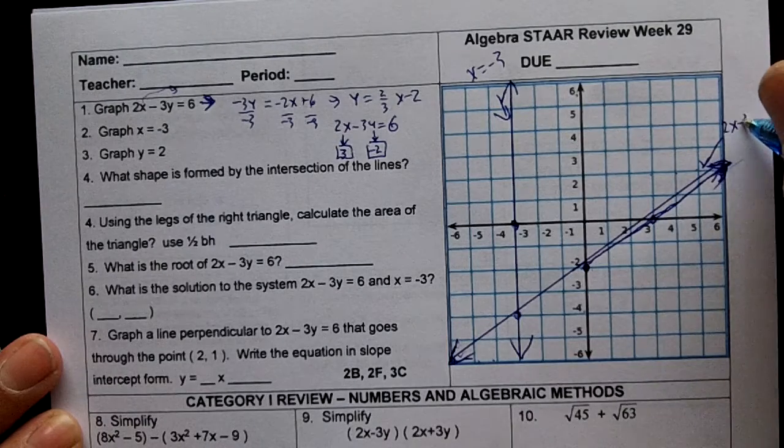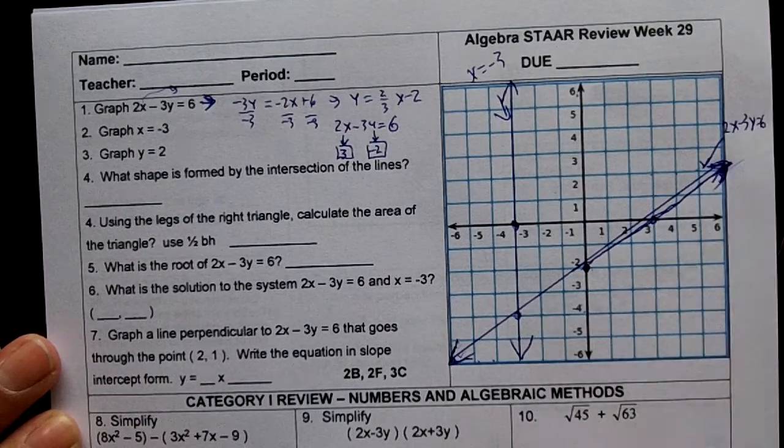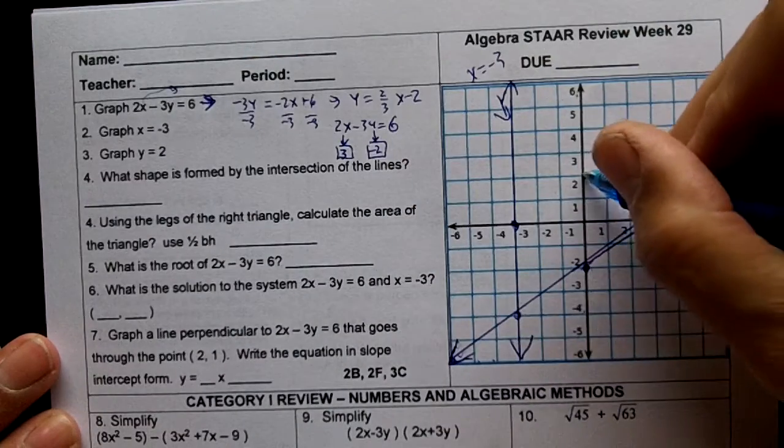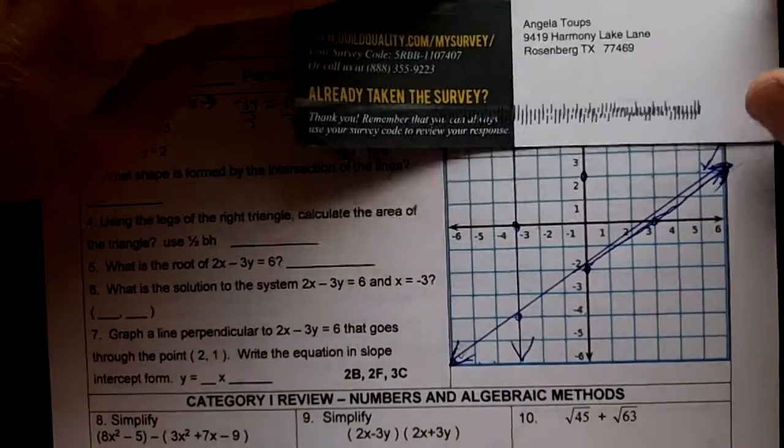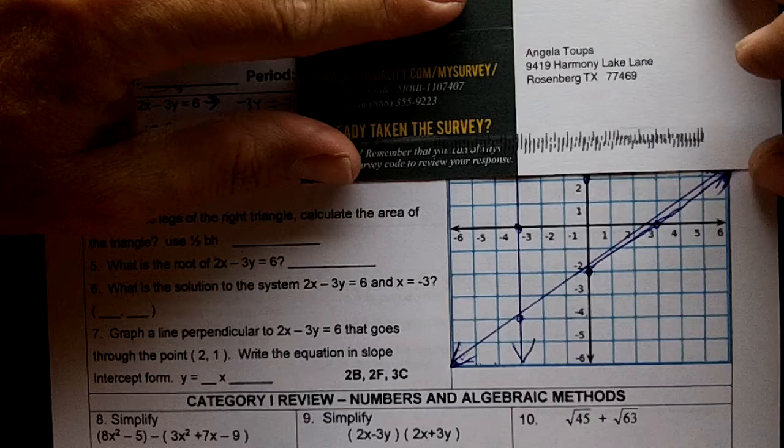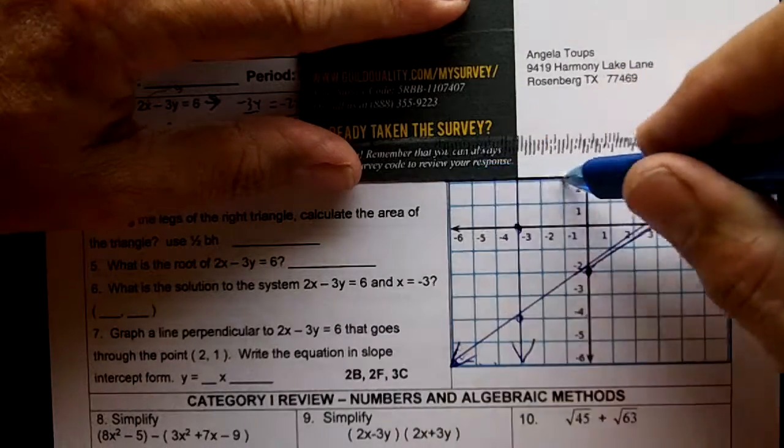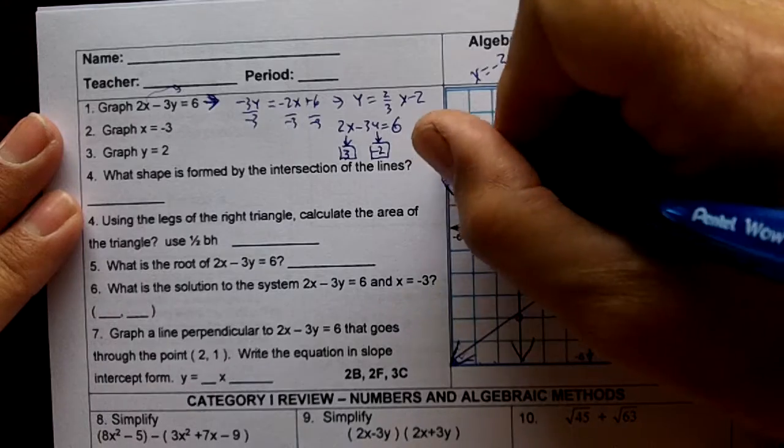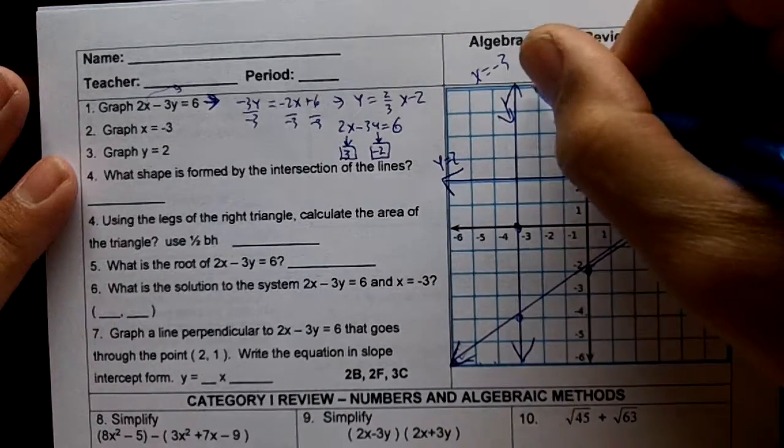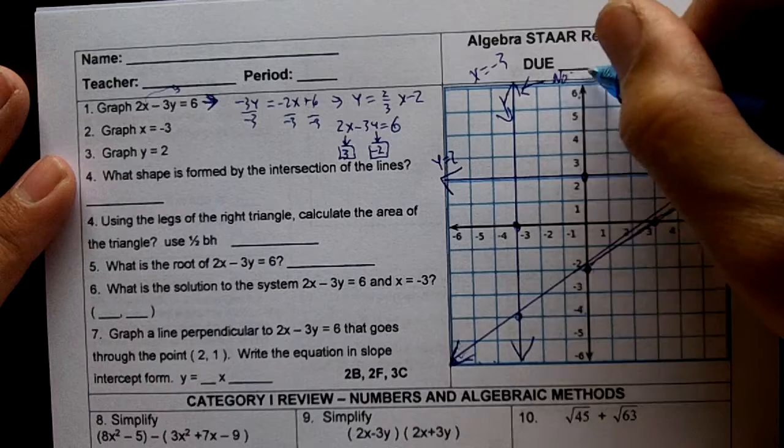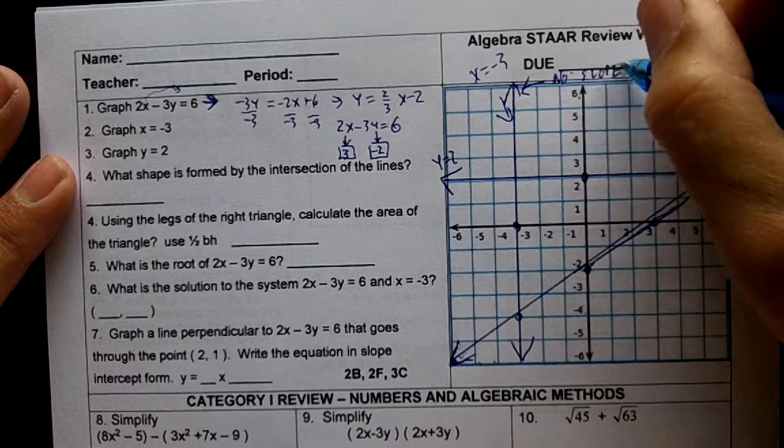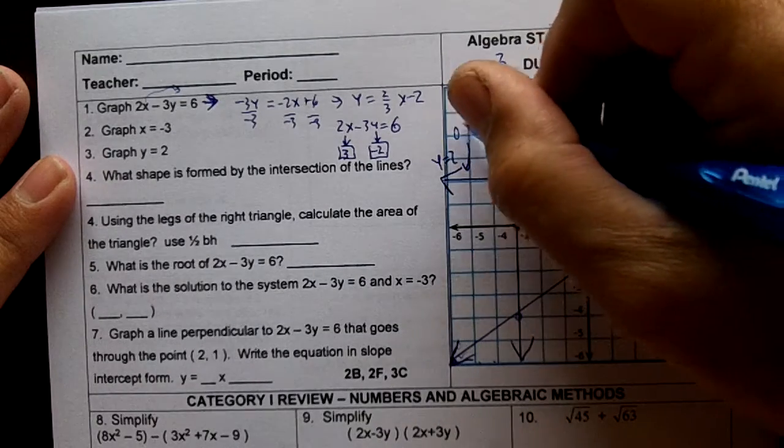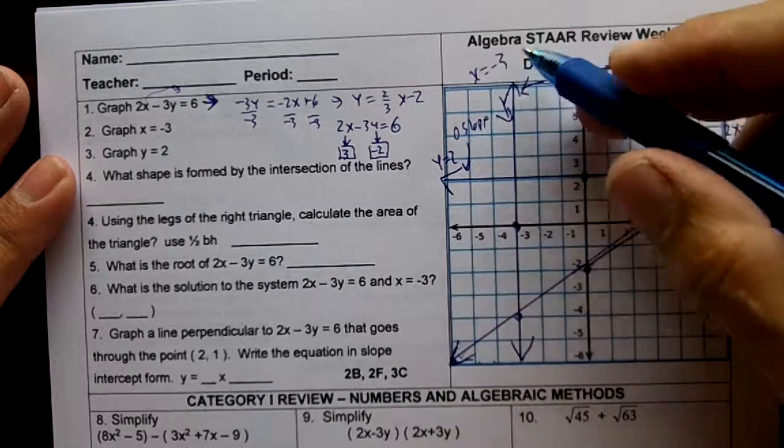This right here is 2x minus 3y equals 6. And then lastly y equals 2 is going to be right here, it's going to be a line straight across just like that. So we have our y equals 2 line. This has no slope and this line right here has zero slope. Vertical line has no slope, flat line has zero slope.